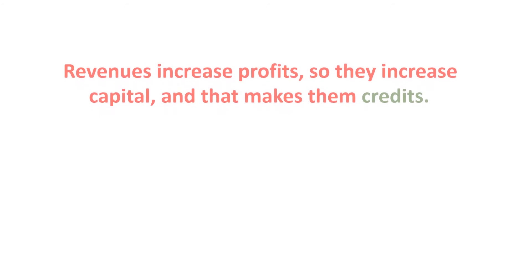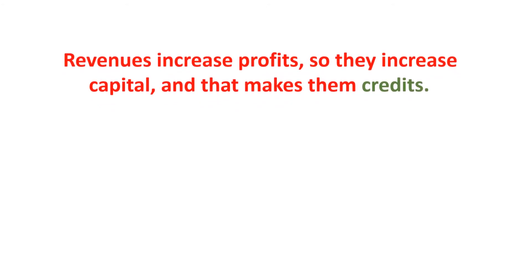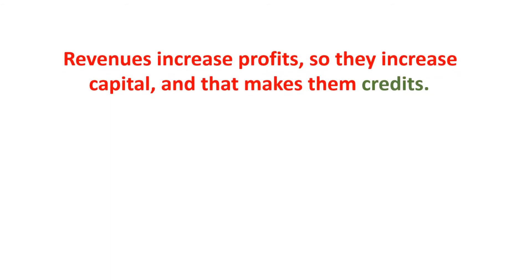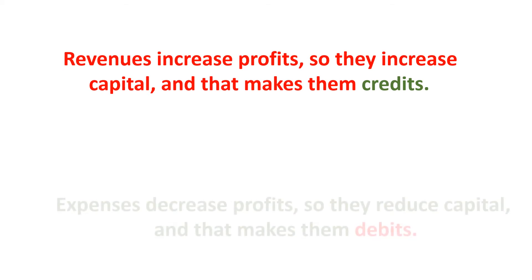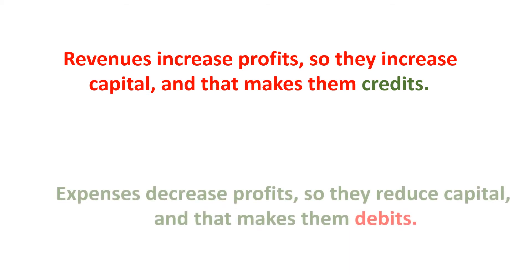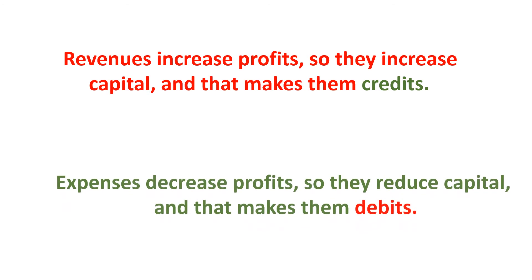In short, to wrap this all up: profits belong to the owners. Revenues increase profits, so they increase capital, and that makes them credits. Expenses decrease profits, so they reduce capital, and that makes them debits. The treatment for expenses is the same as the treatment for assets — increases in expenses are recorded by debiting the appropriate expense accounts.